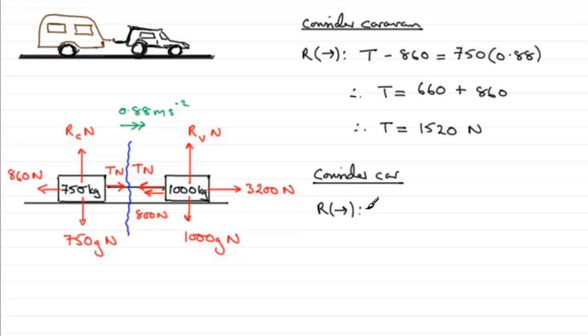Resolving to the right, we've got the 3200 minus the resistance on the car which is 800 newtons. It's minus because it's acting in the opposite direction. We've also got minus T. These two forces are perpendicular to the direction we're resolving in, so no effect. That's our resultant force.